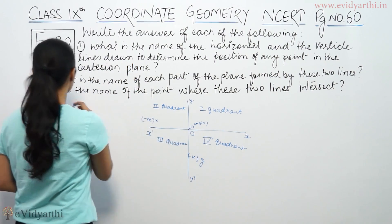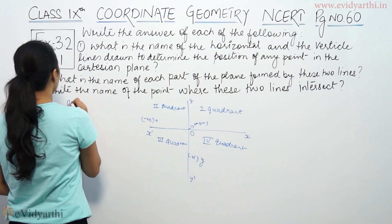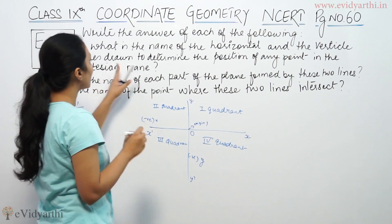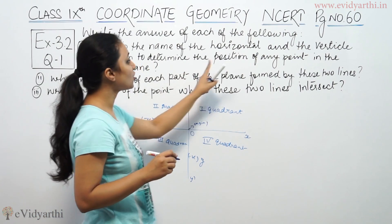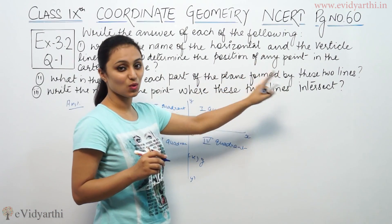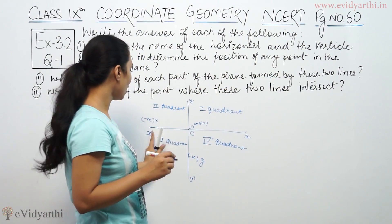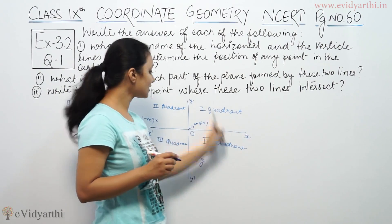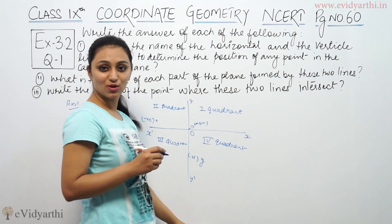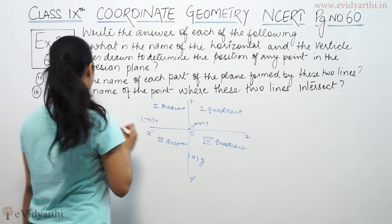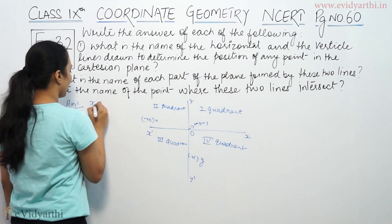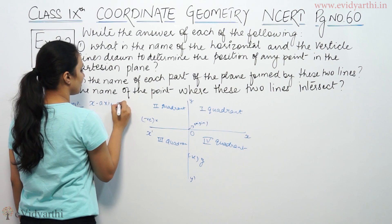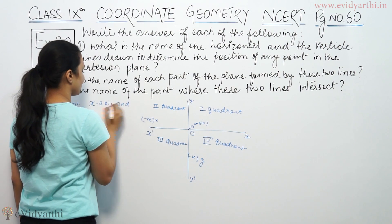So we have three questions to answer. We call the horizontal line the x-axis, and we call the vertical line the y-axis. So x-axis and y-axis are our answers.